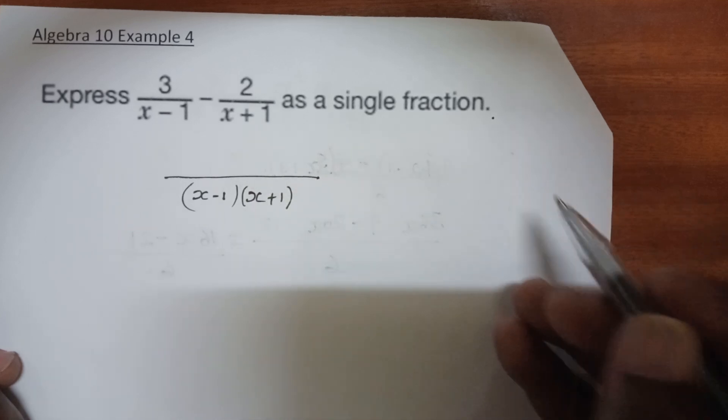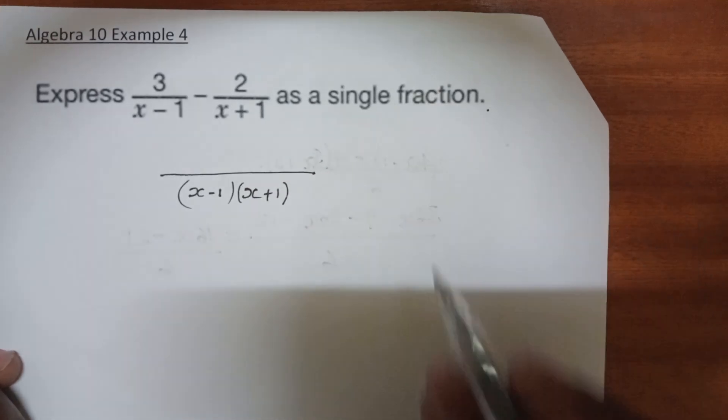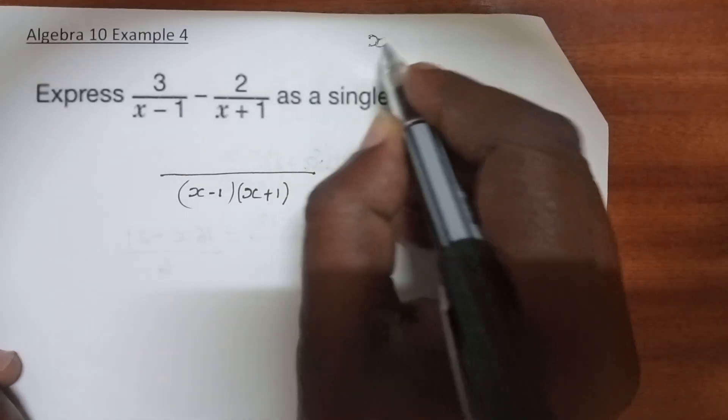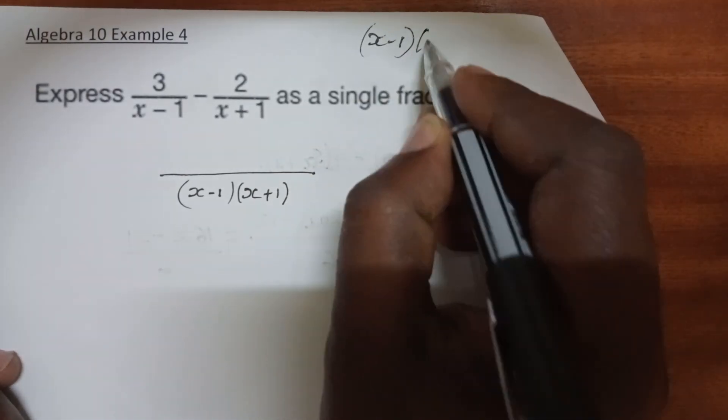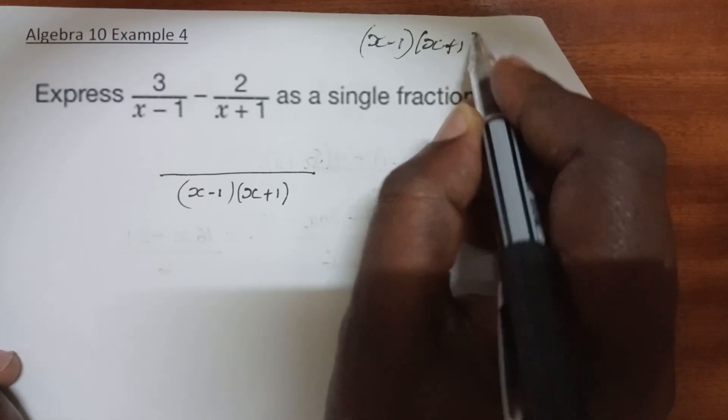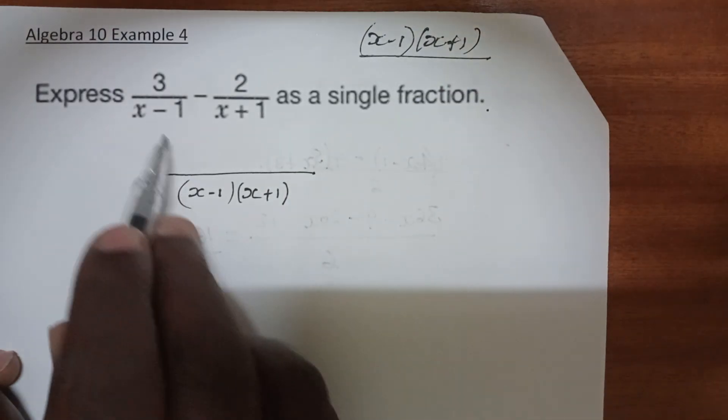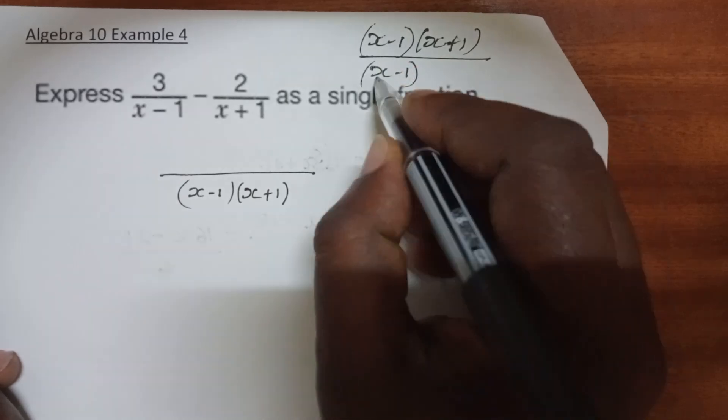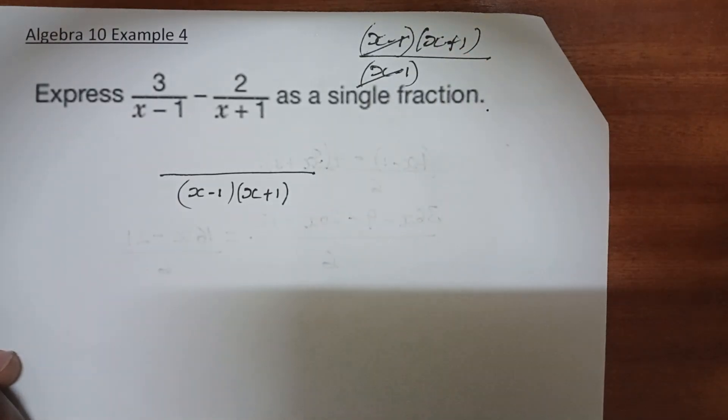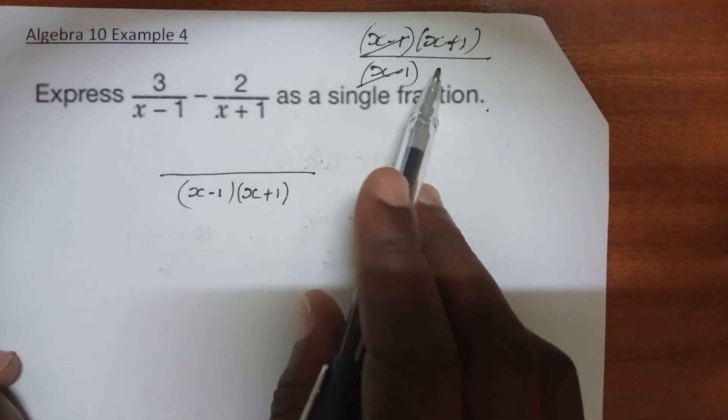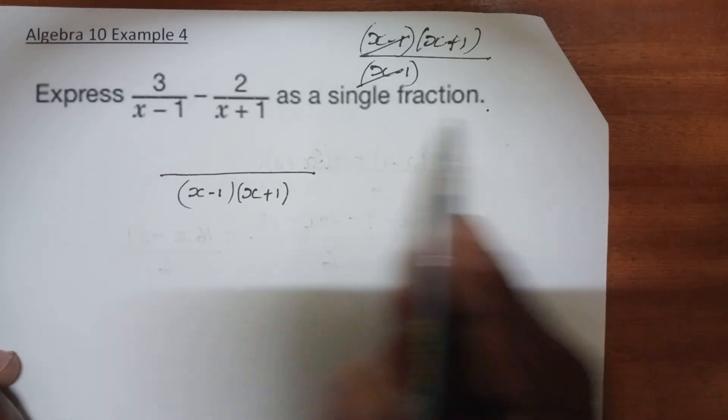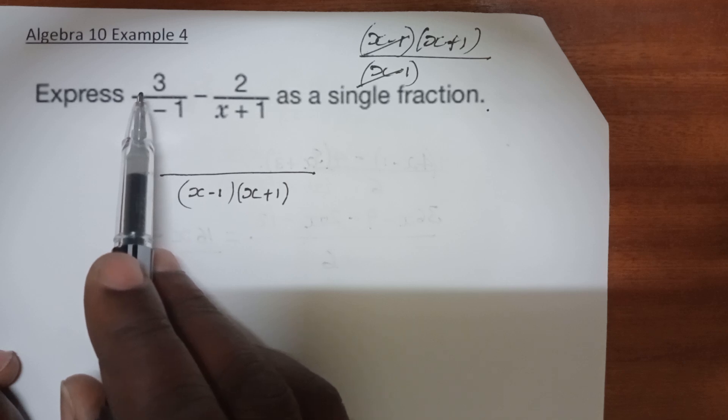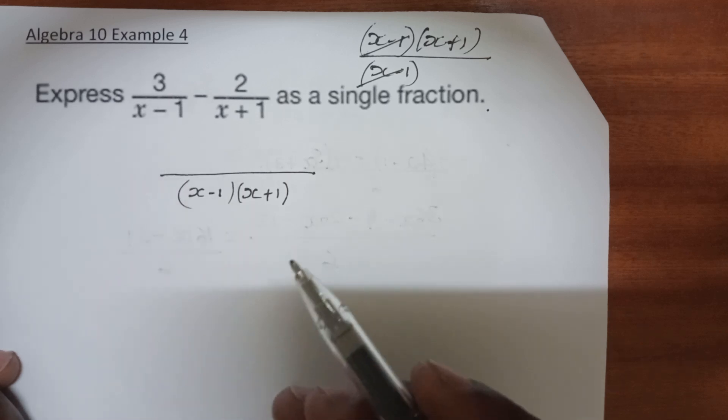I would want to demonstrate it just here. So if you have (x-1)(x+1) divided by, let's say, x minus 1, the two brackets cancel out and you're left with the other bracket, which is x plus 1.